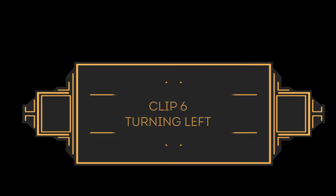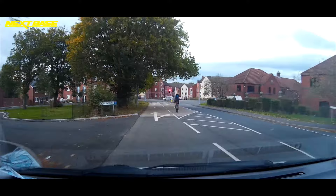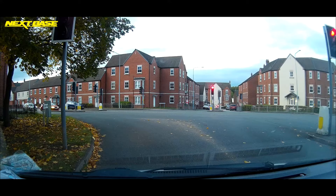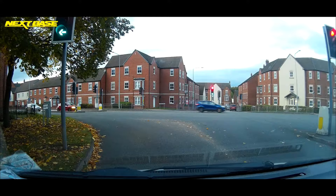Clip six — turning left. We're coming down to the lights and we can see a red light. The question is, can we turn left? Keep an eye on the top left-hand corner, and we can see — yes — that arrow says we can now go left.